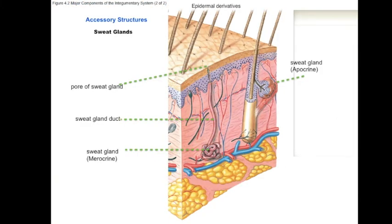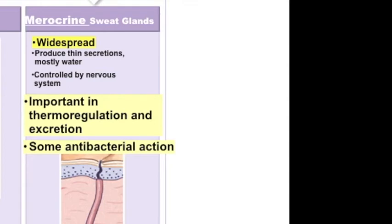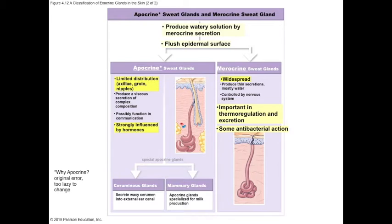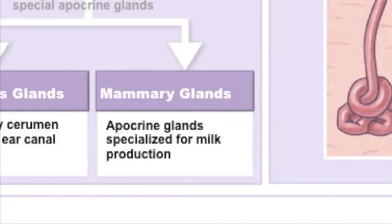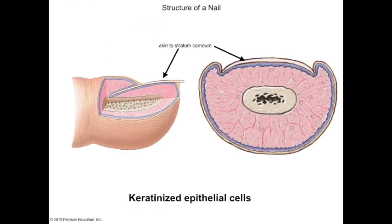Most sweat glands distributed across the body secrete a watery solution important in thermal regulation — as sweat evaporates, it cools the body. There is also another type of sweat gland, localized to areas like the armpits and groin — apocrine sweat glands — which produce odor due to bacterial interaction with their secretions. These secretions are heavily influenced by testosterone and estrogen and may include pheromones. Notably, mammary glands, which produce milk in pregnant and nursing females, are modified apocrine sweat glands.